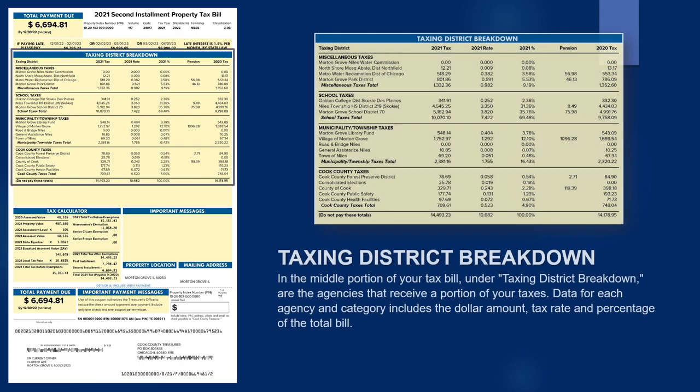In the middle portion of your tax bill are the agencies that receive a portion of your taxes. Data for each agency and category includes the dollar amount, tax rate, and percentage of the total bill.